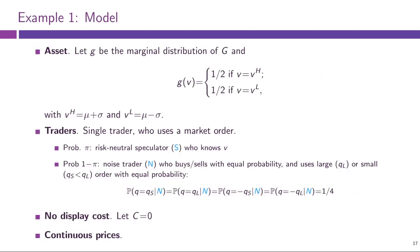Let us look at a simple binary example, similar to what we had in the Glosten-Milgram model. Let g be the probability distribution function of the fundamental value V. We say V is binary: either high or low with probability 50-50. If high, V is the ex ante market valuation mu plus a positive shock sigma; if low, it is mu minus sigma.